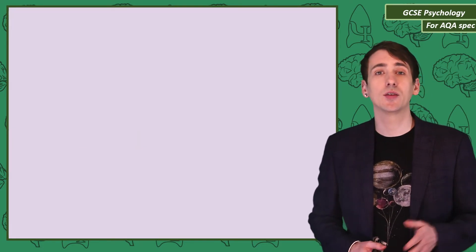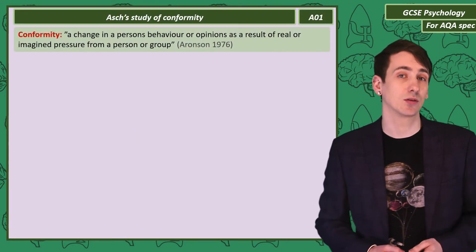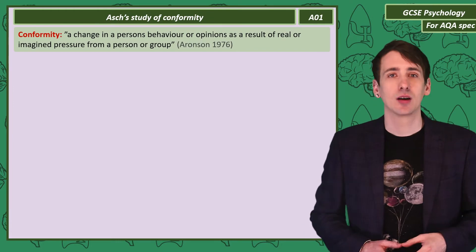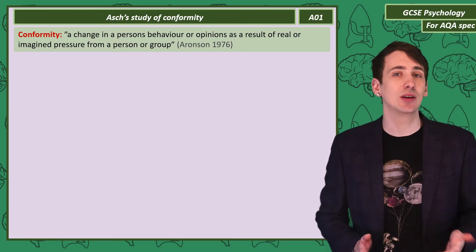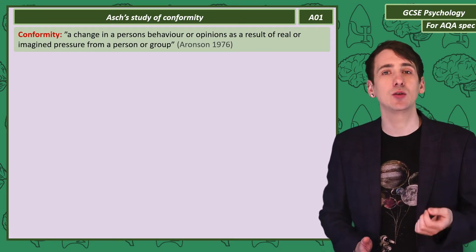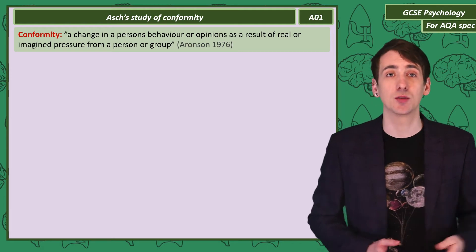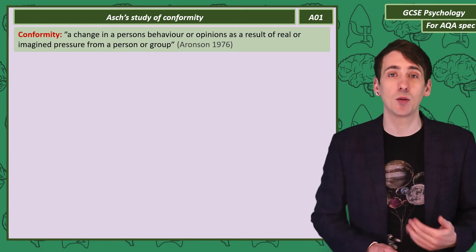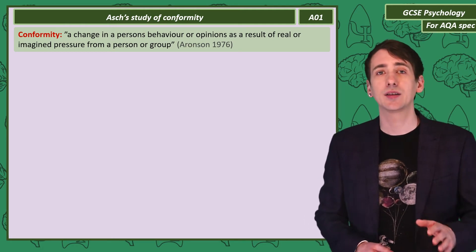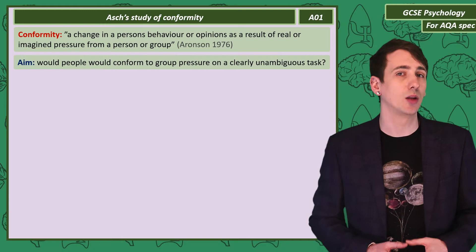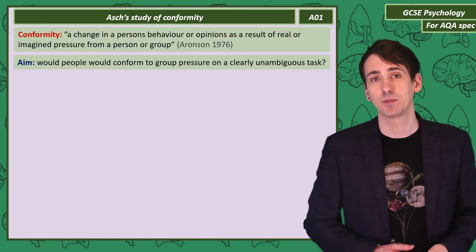The psychologist Aronson gave a generally accepted definition of conformity. Conformity is a change in a person's behaviour or opinions as a result of real or imagined pressure from a person or group. A psychologist called Solomon Asch investigated the limits of conformity.